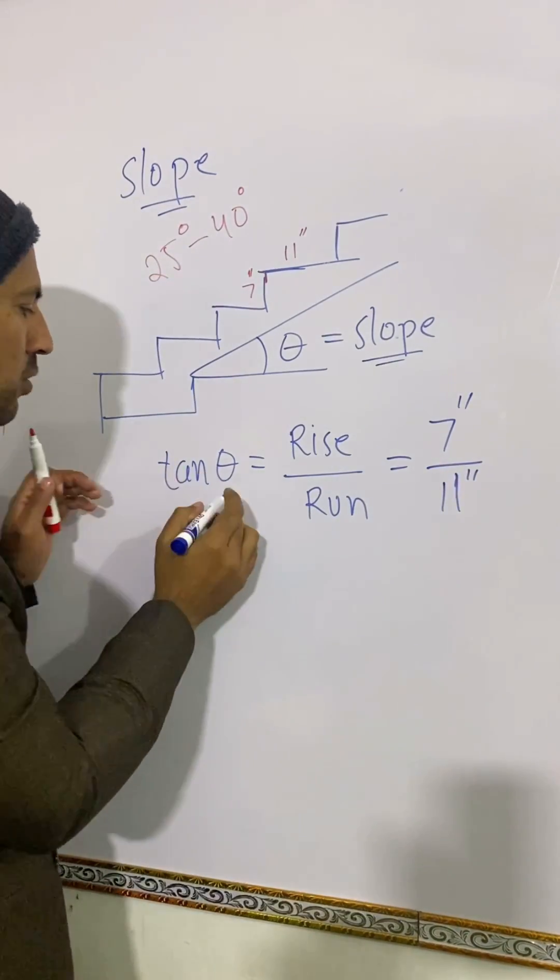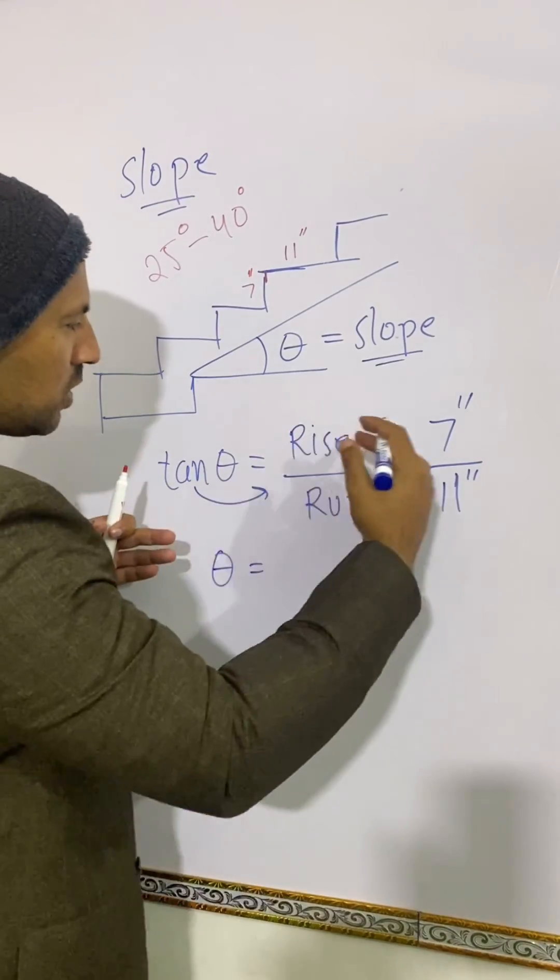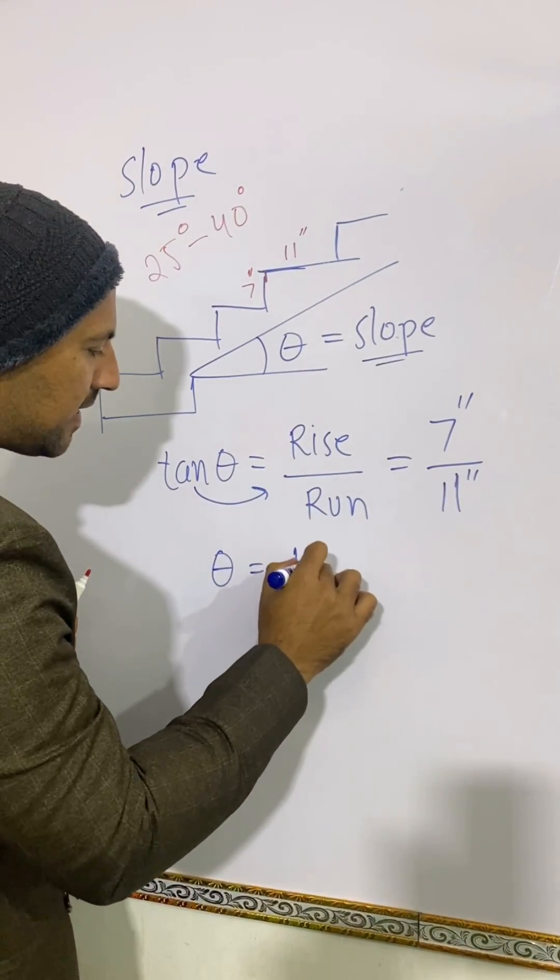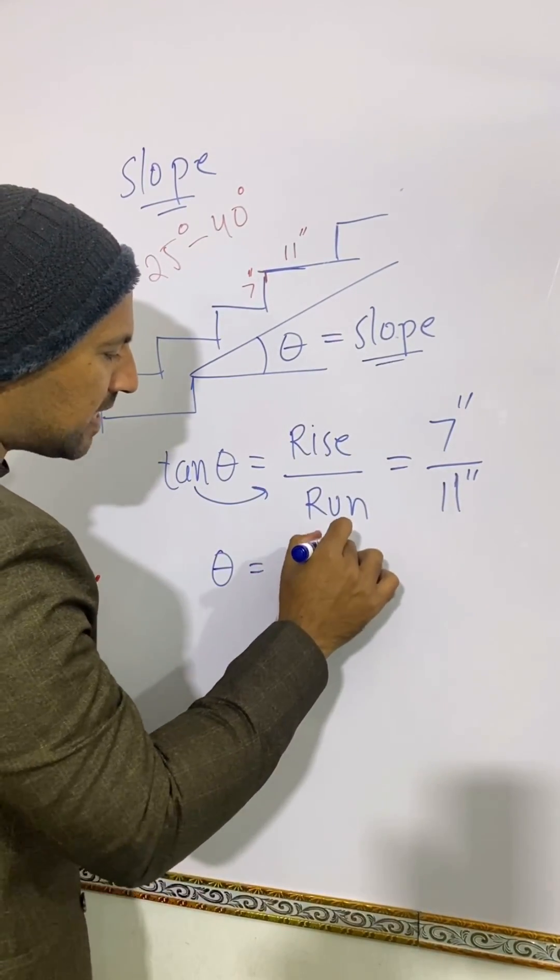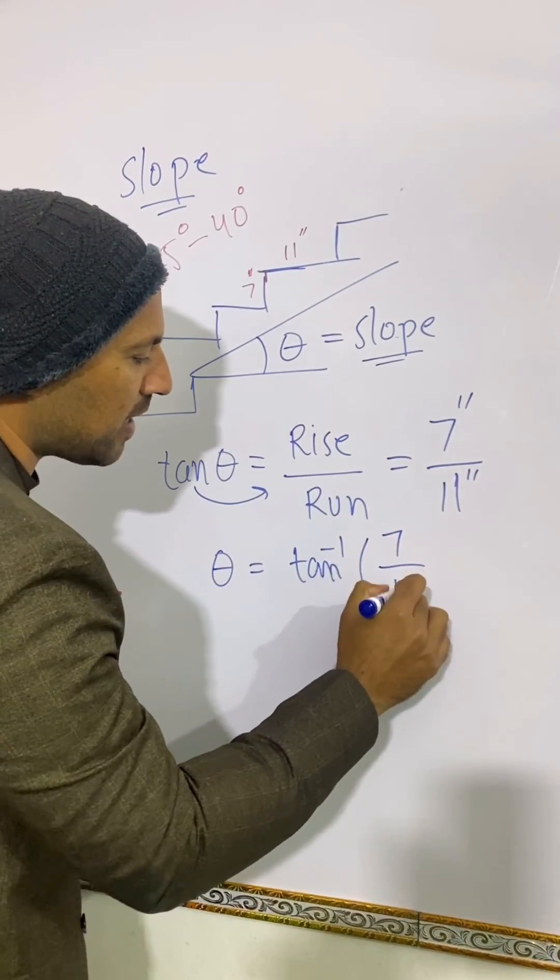Now in order to determine theta, we can bring tangent to work. Moving to the right-hand side, that becomes tangent inverse of the same parameters: 7 by 11.